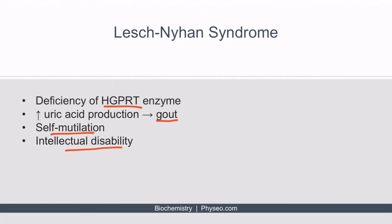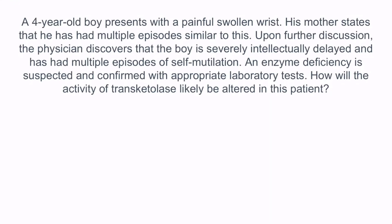A four-year-old boy presents with a painful swollen wrist. His mother states that he has had multiple similar episodes. The physician discovers that the boy is severely intellectually delayed and has had multiple episodes of self-mutilation. An enzyme deficiency is suspected and confirmed with appropriate laboratory tests. From the question stem, this boy has Lesch-Nyhan syndrome — deduced from a history of gout with painful swollen wrists, intellectual disability, and self-mutilation.